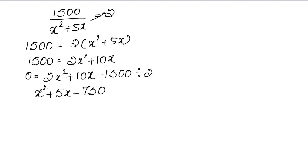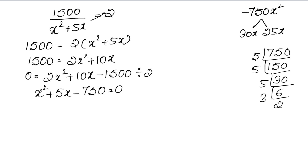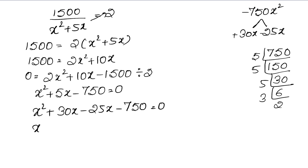To factor x squared plus 5x minus 750, we need two numbers whose product is 750 and whose difference gives 5x. We find 30x and 25x work: 30 minus 25 is 5, and 30 times 25 is 750. So we write x squared plus 30x minus 25x minus 750 equals 0.